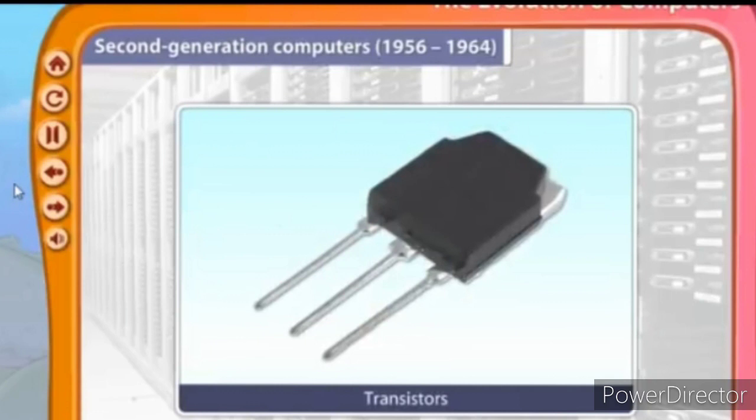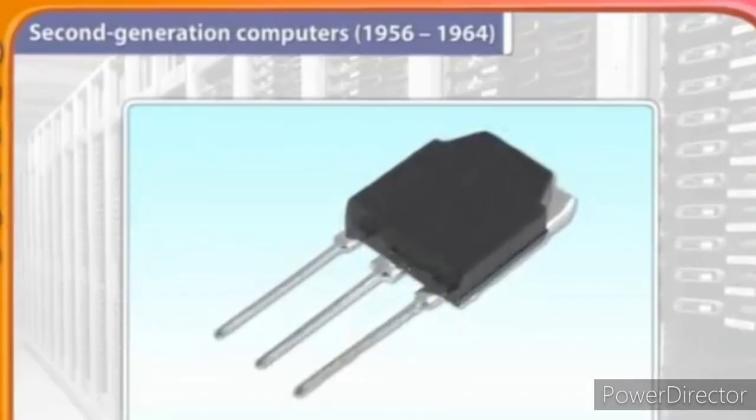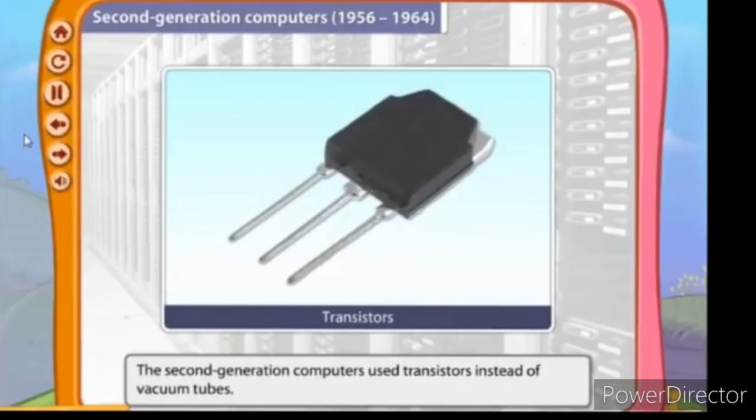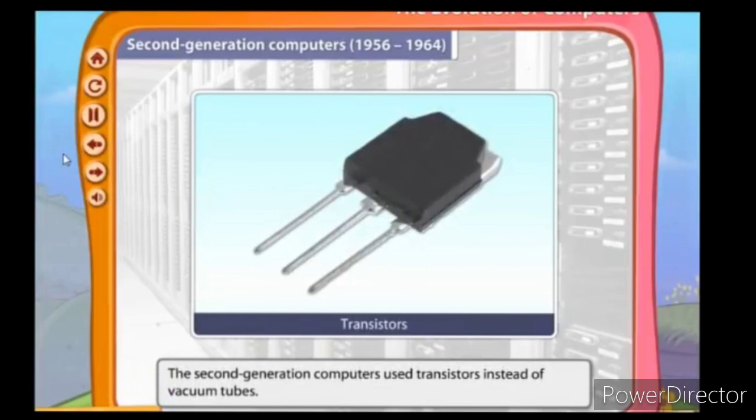The second generation computers were developed between 1956 and 1964. The second generation computers used transistors instead of vacuum tubes. Now, what is the difference between first generation and second generation of computers? The second generation computers used transistors, and as transistors were smaller than vacuum tubes, the computers became much smaller in size.